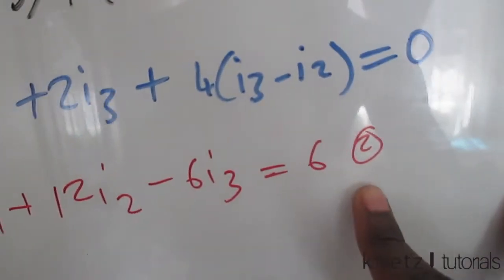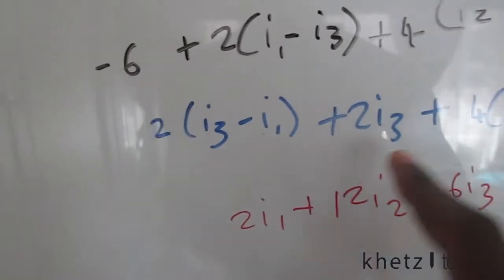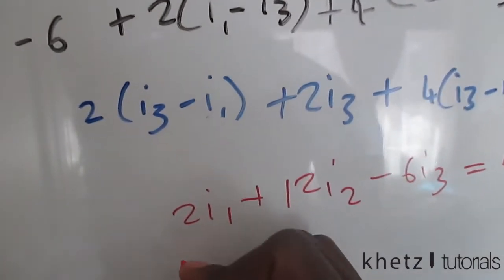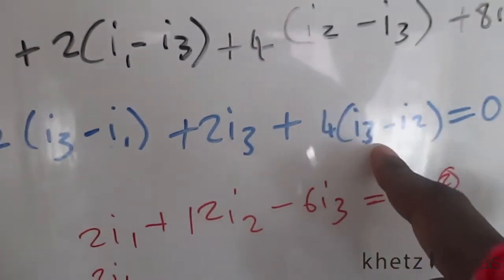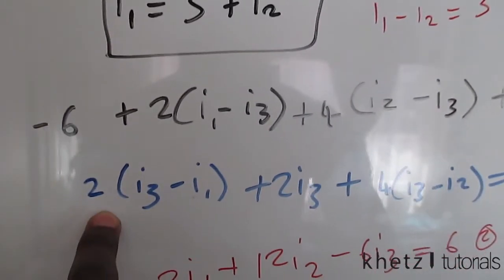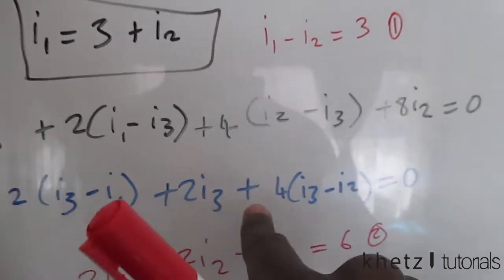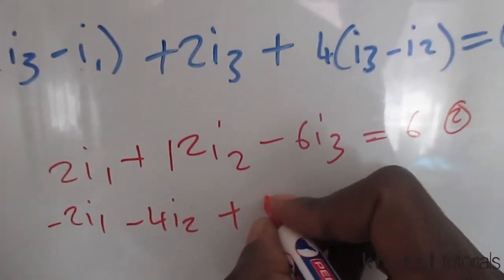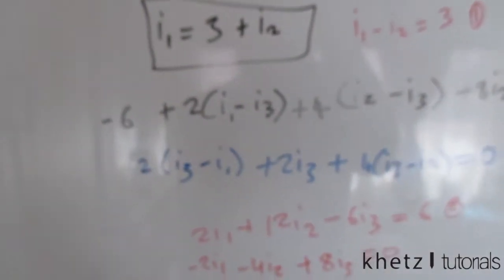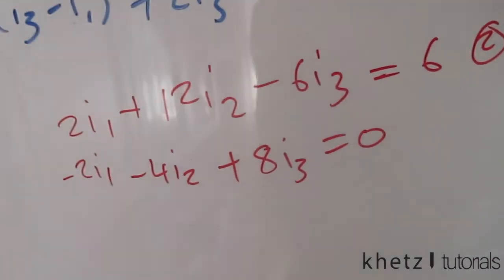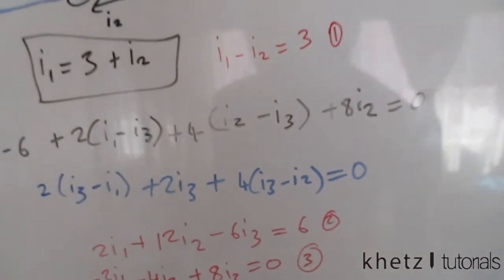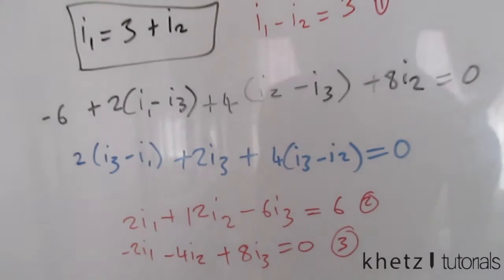For the third equation, simplifying the i3 mesh: the i1 coefficient is negative two, the i2 coefficient is negative four, and the i3 coefficient is two plus six equals eight. There are no constants on the right-hand side, so the third equation is: negative two i1 minus four i2 plus eight i3 equals zero.